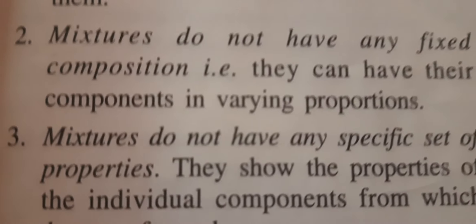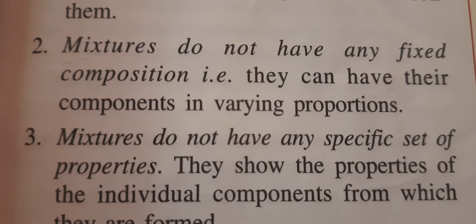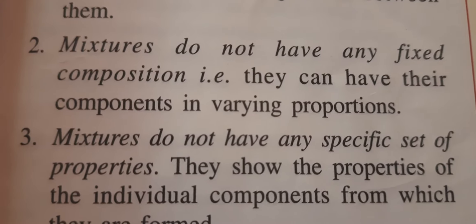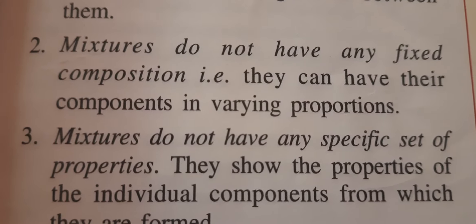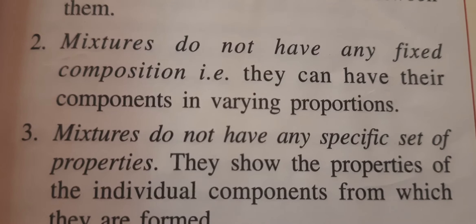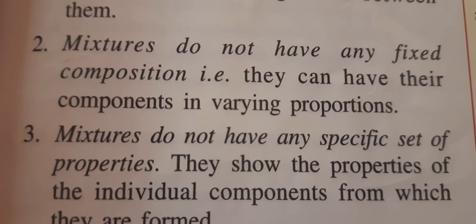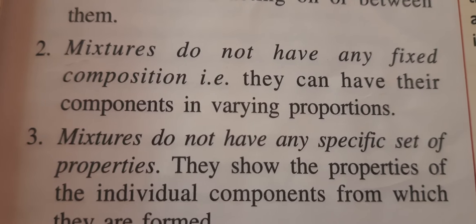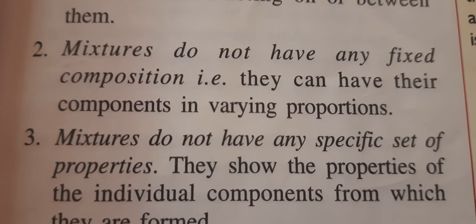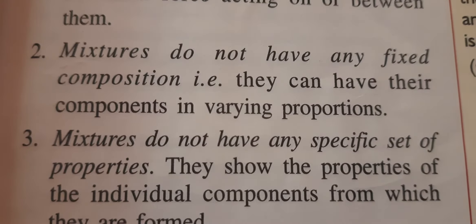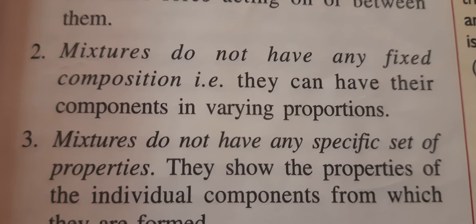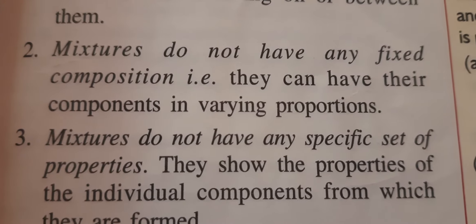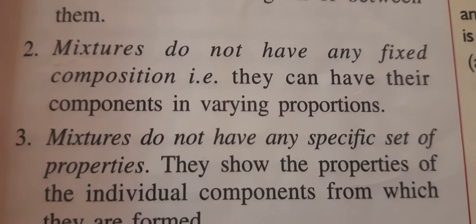The second property of the mixture is that mixtures do not have any fixed composition. This means they can have their components in varying proportions. For example, you have a mixture of salt and sugar or salt and pepper. Salt can be in any amount, or pepper can be in any quantity. So in this way, they do not have a fixed composition.